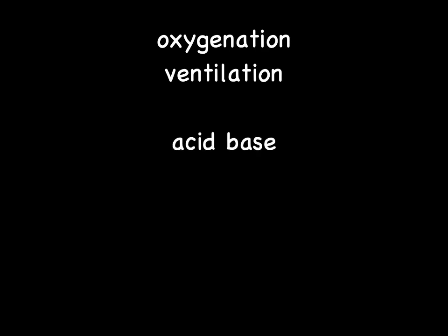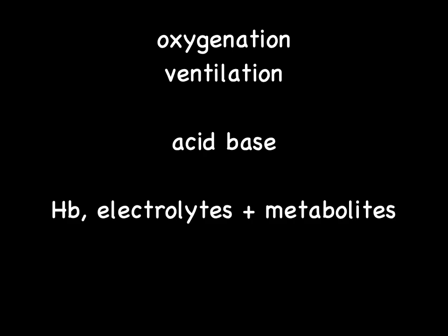There are a few things that we can look at when we have a blood gas. We can look at oxygenation and ventilation. We can talk about acid base. We can look at other parameters — so hemoglobin, electrolytes, and metabolites to give us some valuable information. And there's a whole bunch of other fancy stuff that we won't go into too much depth on.